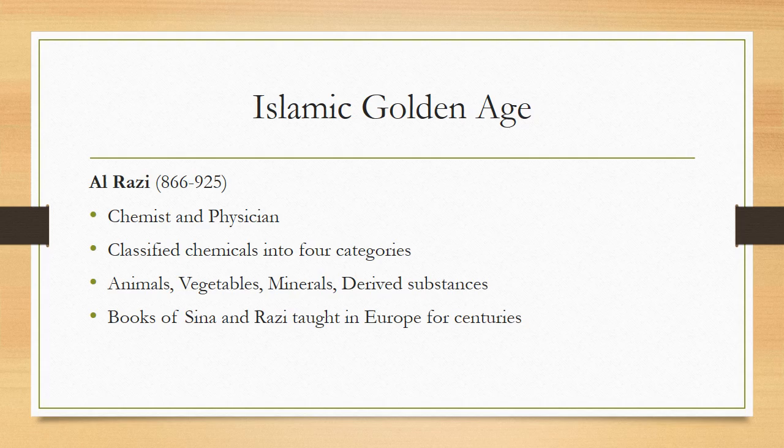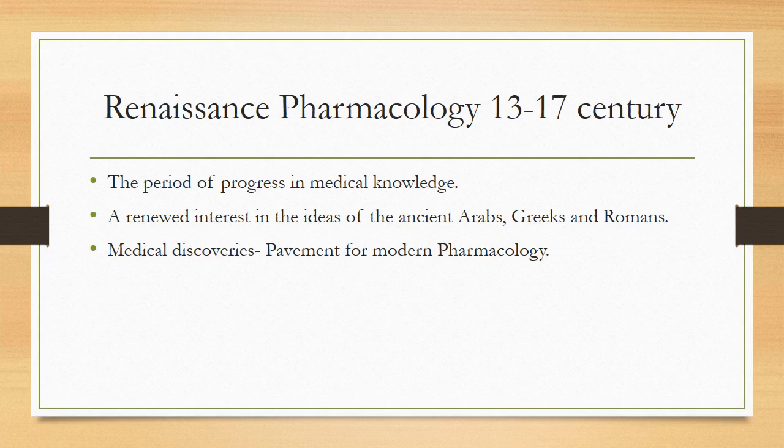When Al-Razi came, that period became known as the Islamic golden age. He was a chemist and physician who classified chemicals into four categories: animals, vegetables, minerals, and derived substances. Books of Ibn Sina and Al-Razi were taught in Europe for centuries. From the 13th to the 17th century, there was a period of progress in medical knowledge, with renewed interest in the ideas of the ancient Arabs, Greeks, and Romans. Most major medical discoveries occurred in this period, laying the pavement for modern pharmacology.